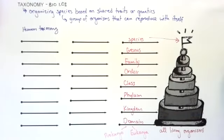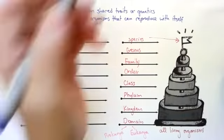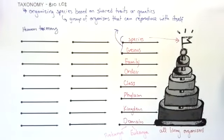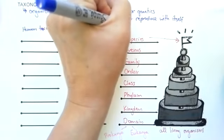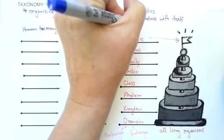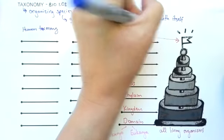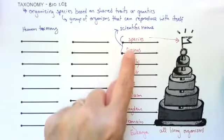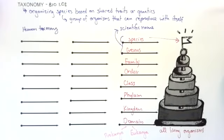Genus and species together, these make up the scientific name of an animal. Let's jump over here to humans and do the human taxonomy, and we'll see how these last two make up scientific name.